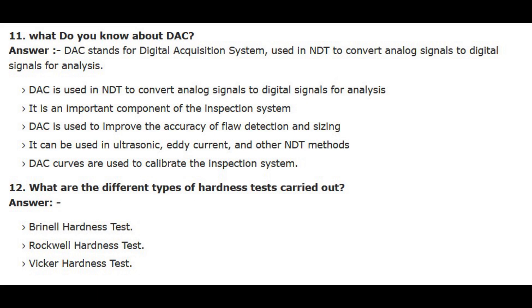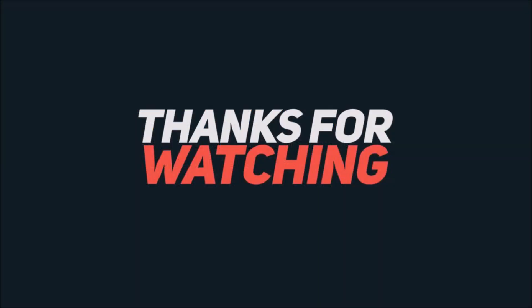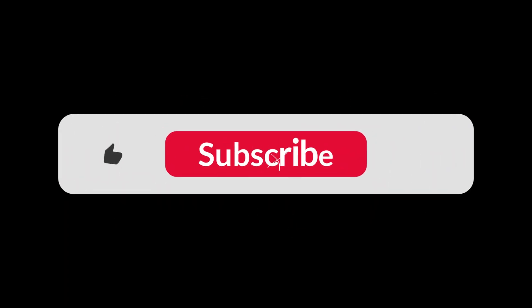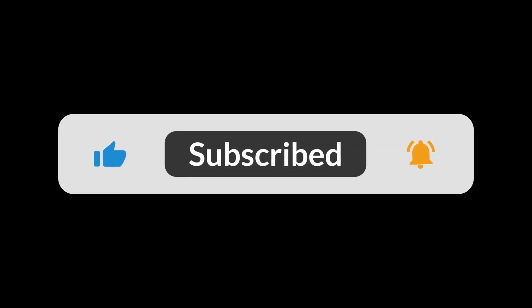Number 12. What are the different types of hardness tests carried out? Answer. Brinell Hardness Test, Rockwell Hardness Test, and Vickers Hardness Test. I hope these questions are helpful for you. Thanks for watching the video. Do not forget to click on the bell icon.